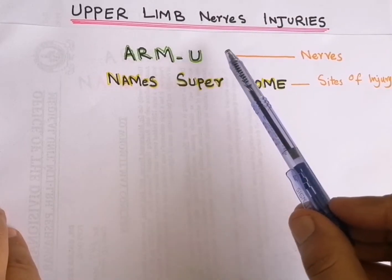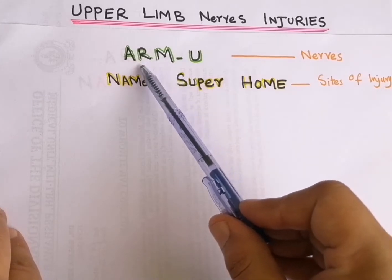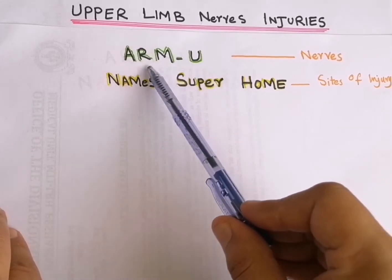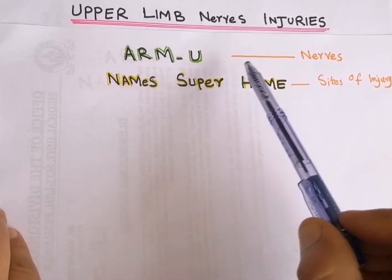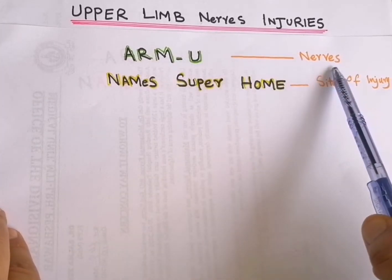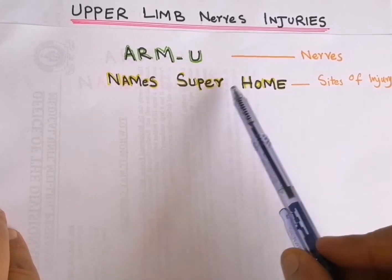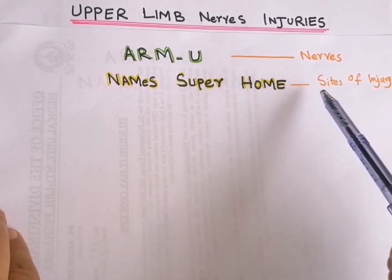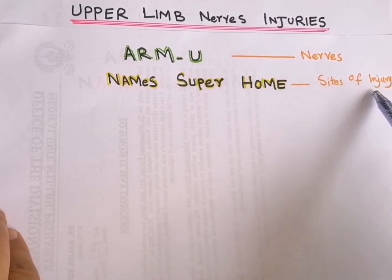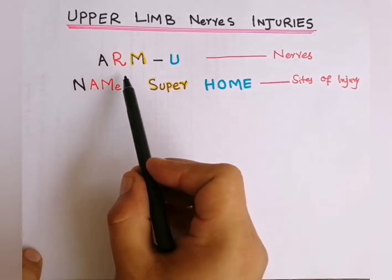For upper limb nerve injury, remember the mnemonic RMU, which represents nerves of the upper arms, while NAMS SUPER HOME represents sites of the injury.